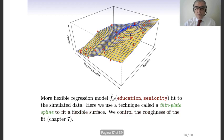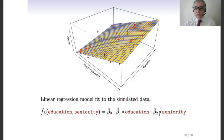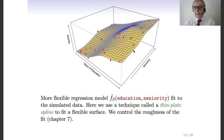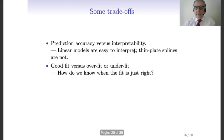The approximation provided by the thin plate spline is better, but with the linear model you have coefficients β̂₁ and β̂₂ that give you explicitly the importance of education and seniority. This is a chance to interpret the role and importance of these features — something you do not have when considering the thin plate spline.